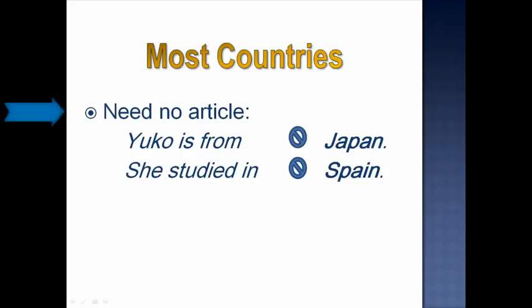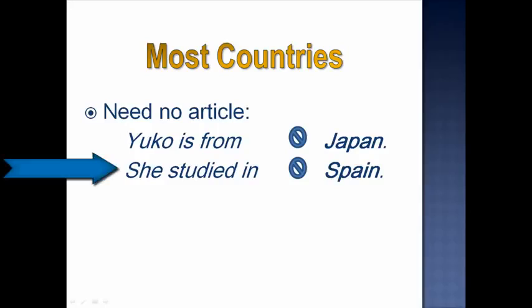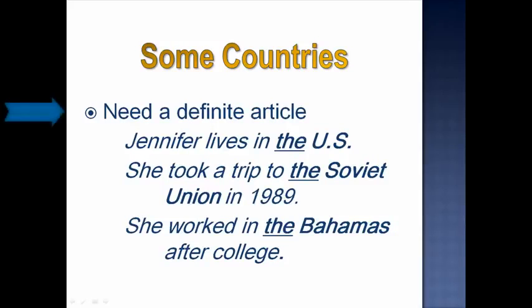Most countries need no article. For example, Yuko is from Japan. She studied in Spain. We use a zero article — no article — before Japan and Spain. However, some countries need a definite article, and I'll talk about myself for a moment to give you a few examples.